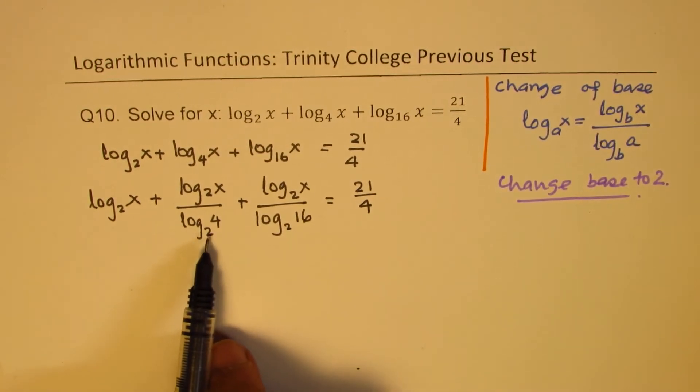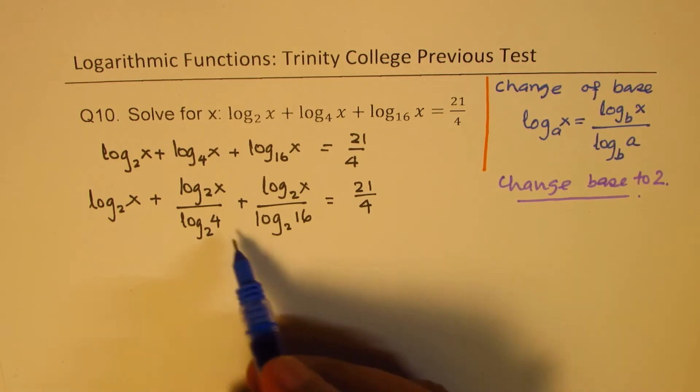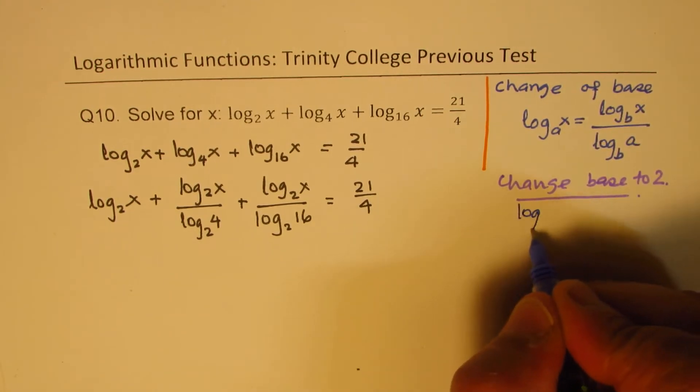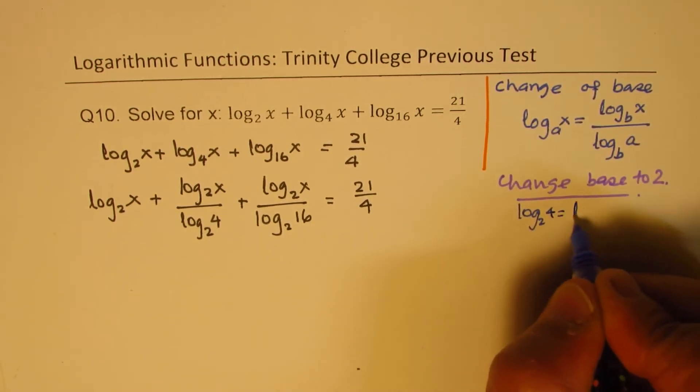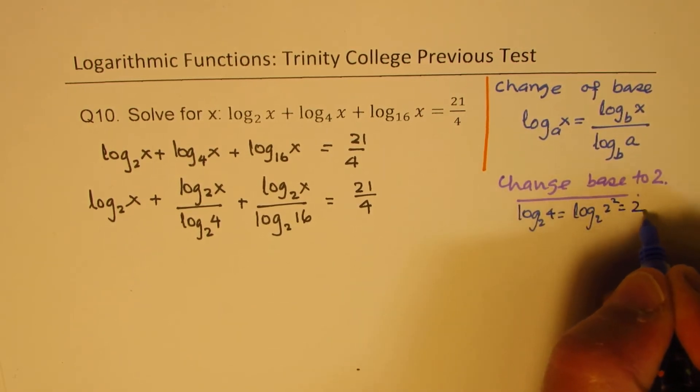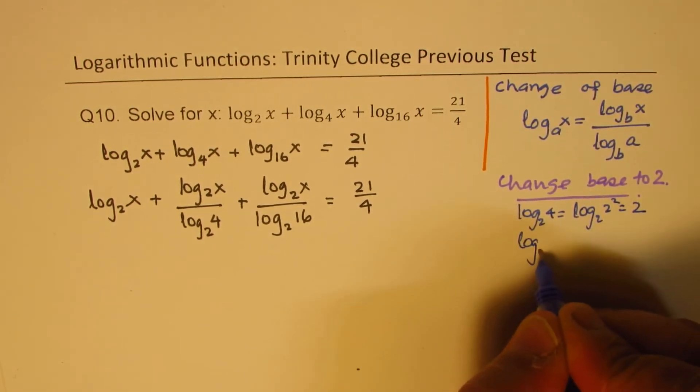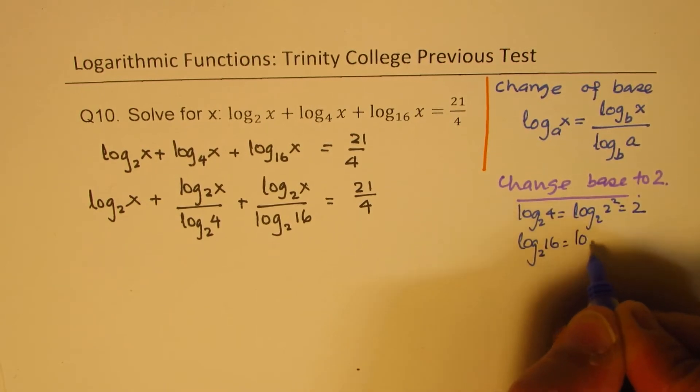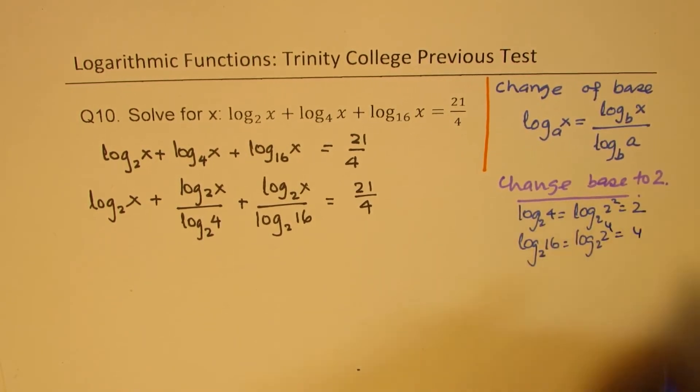Now what is log₂(4)? So let's write this on the right side and then we'll replace. Log₂(4) as you know is log₂(2²) which should be 2. And log₂(16) is log₂(2⁴), so that should be 4. So we'll replace these values.